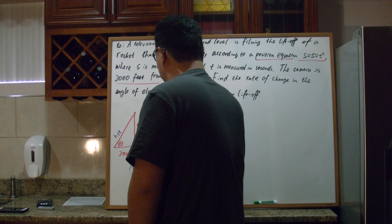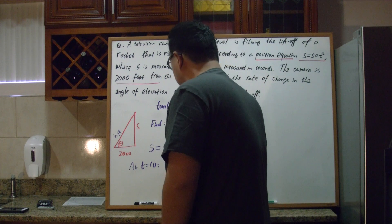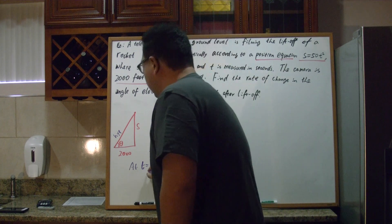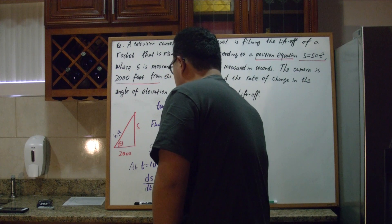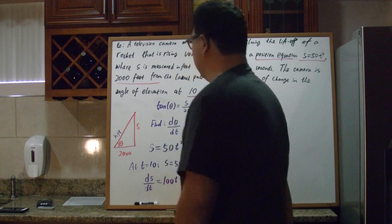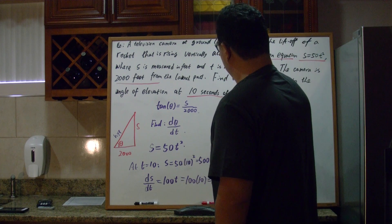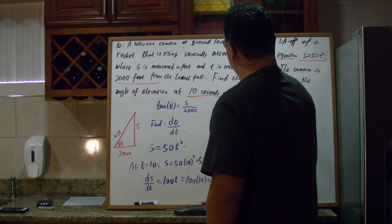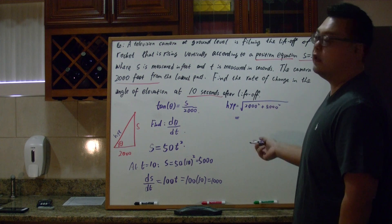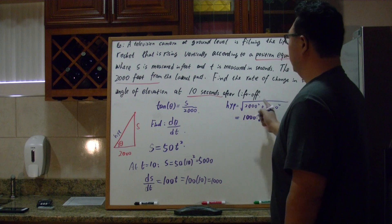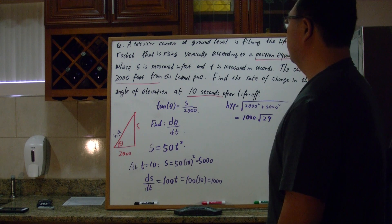At t equals 10 seconds, our S will be 50 times T squared, which is 50 times 100, giving us 5,000 feet high. And our dS/dt is 100t, which is 100 times 10, which is 1,000. The hypotenuse is the square root of 2,000 squared plus 5,000 squared. We can factor out 1,000 to get 1,000 times the square root of 4 plus 25, which is 1,000 times radical 29.